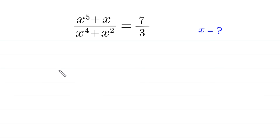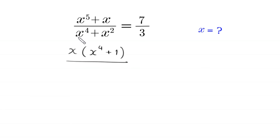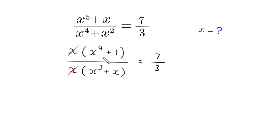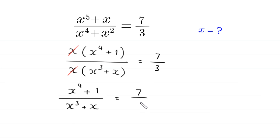Hello everyone, welcome to how to solve this very nice algebra equation: (x⁵ + x) / (x⁴ + x²) = 7/3. Our job is to find all possible values of x. Starting from the numerator, we factor out x as a common factor, leaving (x⁴ + 1). From the denominator, we factor out x, leaving (x³ + x), which equals 7/3. The x cancels, giving (x⁴ + 1) / (x³ + x) = 7/3.